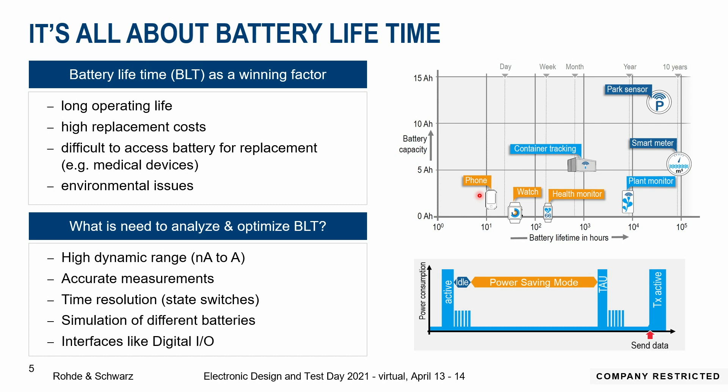But why do we do all of this — all these different kinds of batteries and different characteristics? One very important point is battery lifetime. We all know we want our cell phone to last a long time, going through the day on a charge every one or two days. When we look at smartwatches, we actually expect them to last a bit longer — charging once a week or maybe once a month.